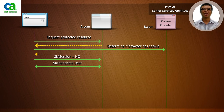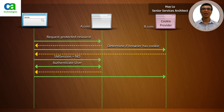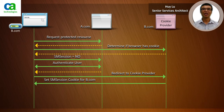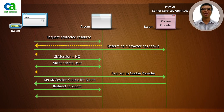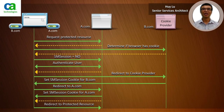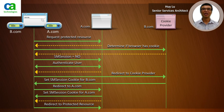The user then authenticates to a.com in step 4. In step 5, the user is redirected to b.com — the cookie provider domain — with the SM session cookie in the query string. The cookie provider sets the SM session cookie in the b.com domain and redirects the user back to a.com with the SM session cookie in the query string. In step 8, a.com sets the SM session cookie in the a.com domain, and in step 9 redirects the browser back to the protected resource. At this stage, the browser will have both a.com and b.com SM session cookies.